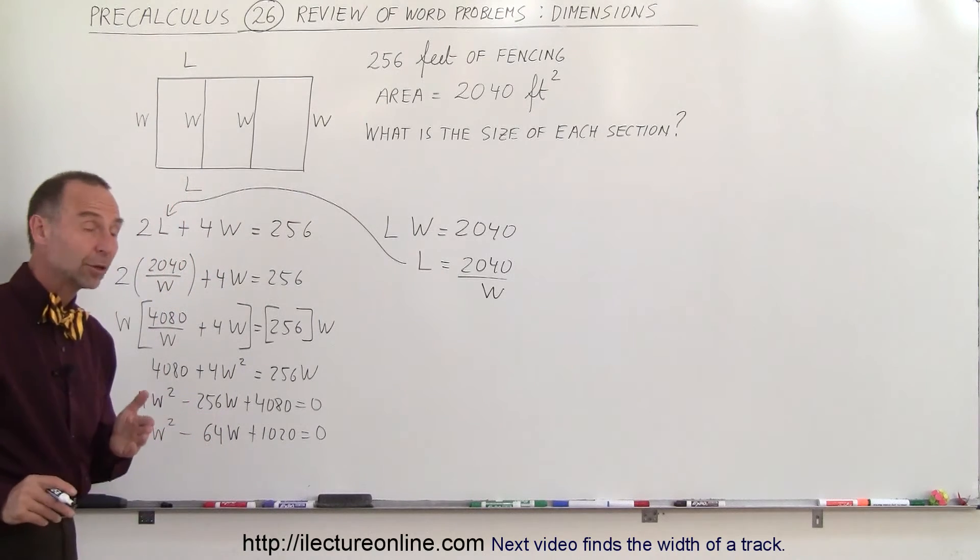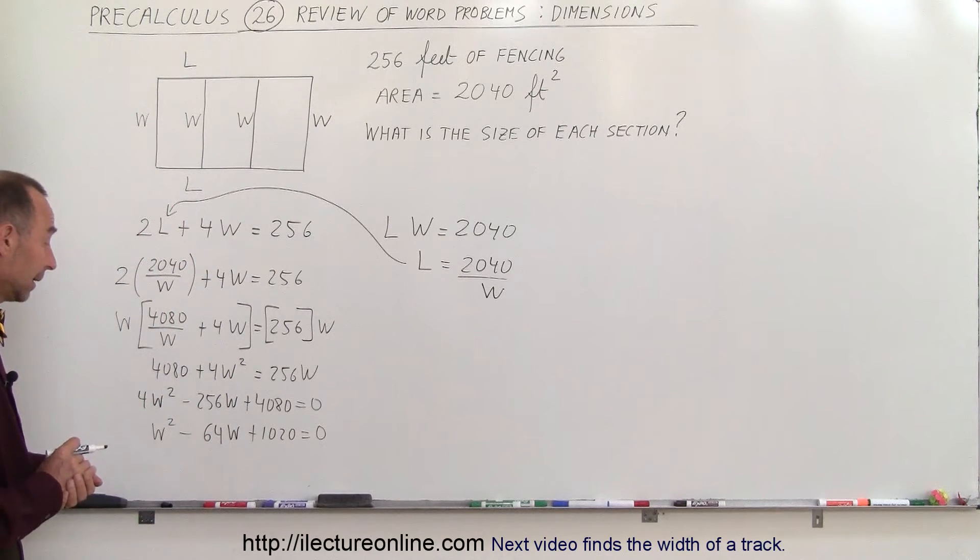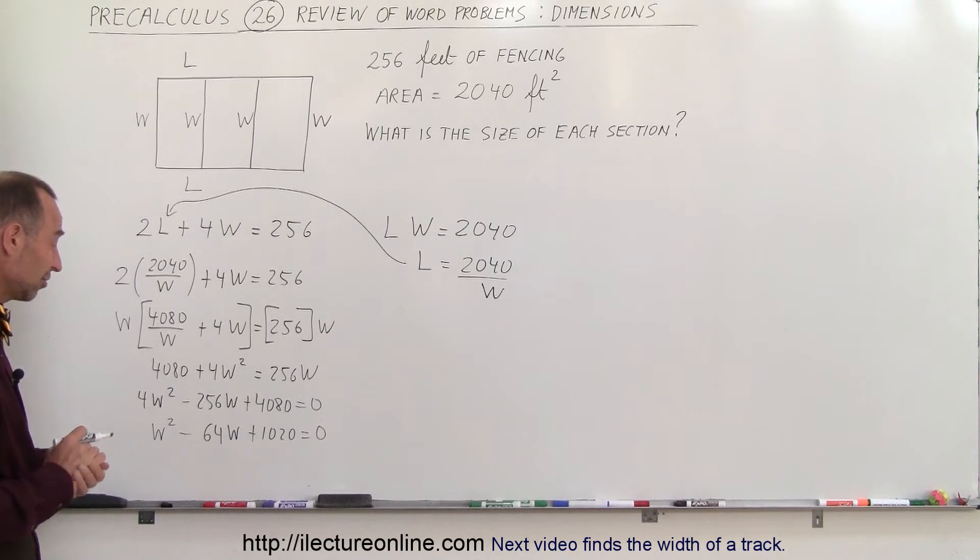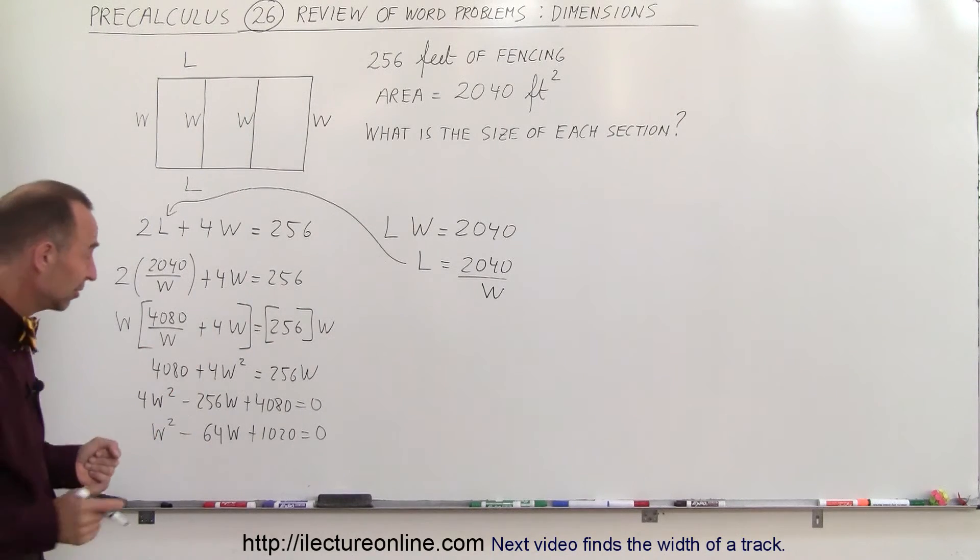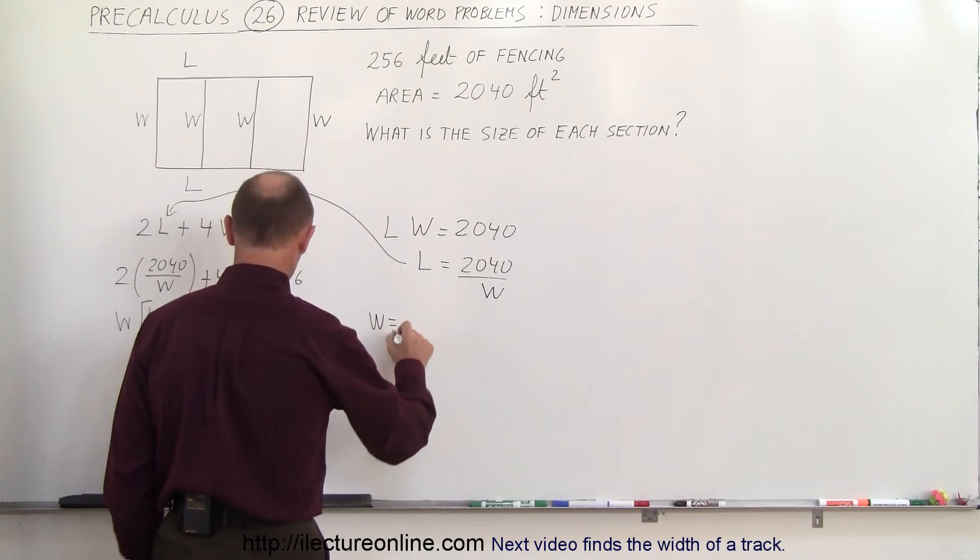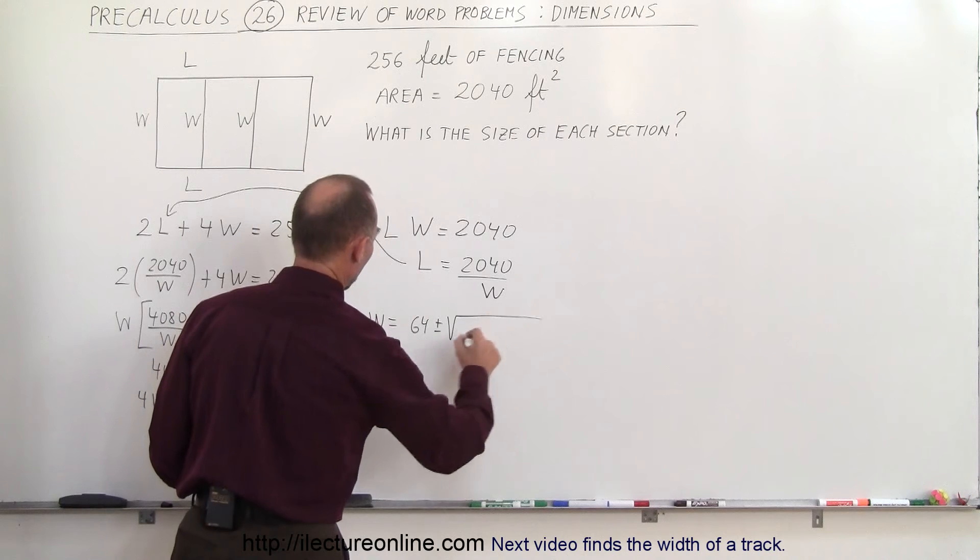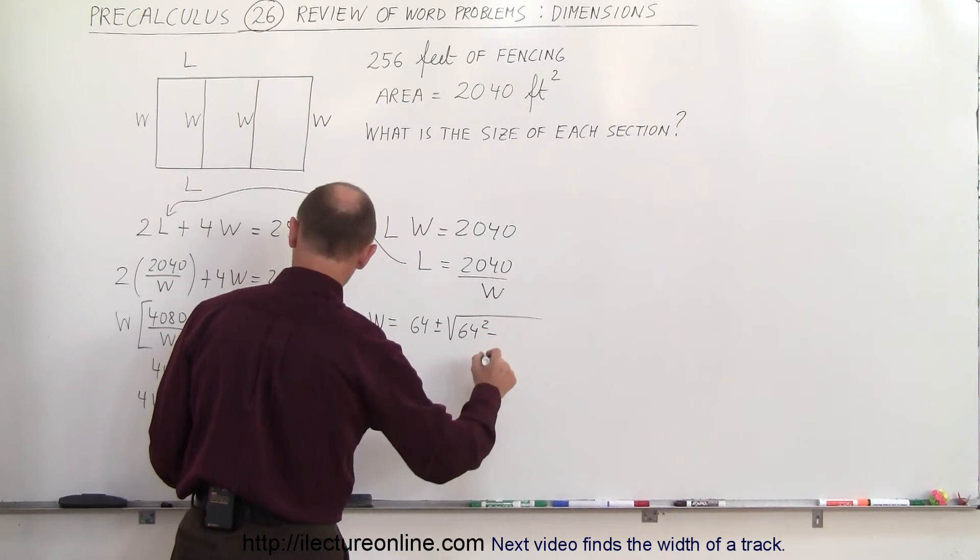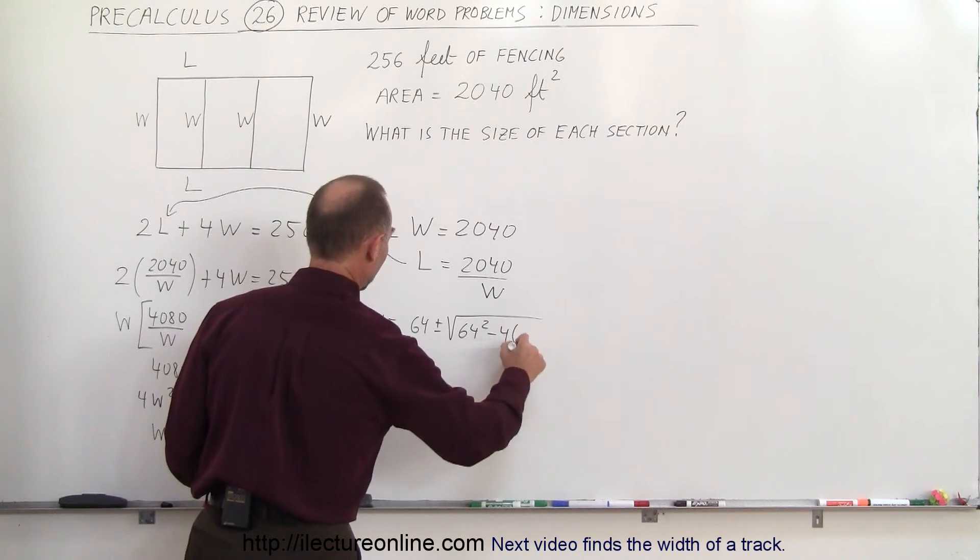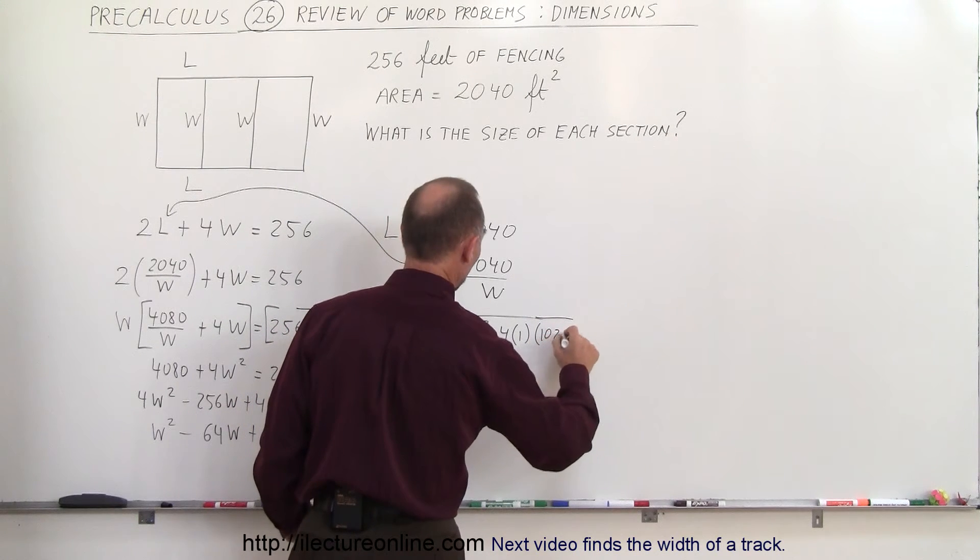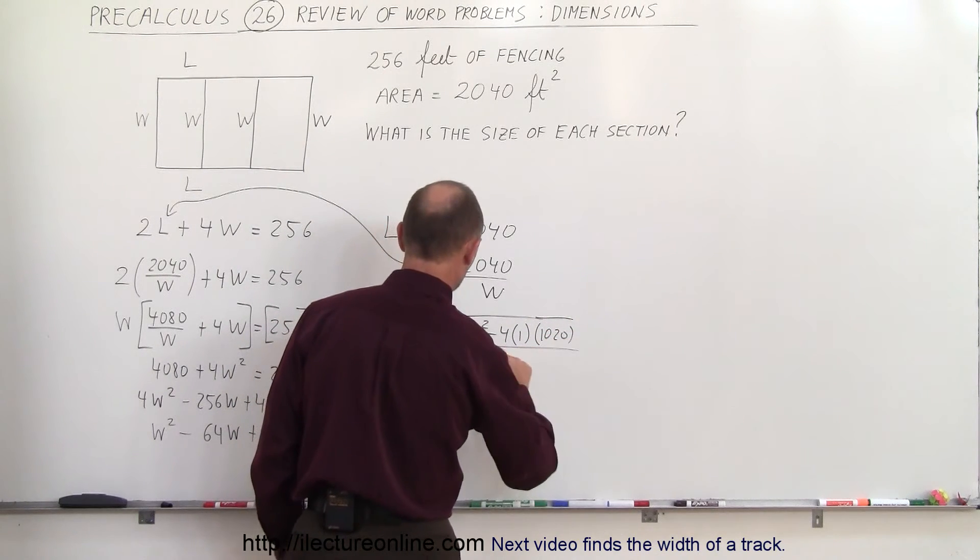Now we're ready to go ahead and solve that. It looks like we probably want to use the quadratic formula here because we could try to factor but quadratic formula is easier so let's do that. So W is equal to minus B which is 64 plus or minus the square root of 64 squared minus 4 times A which is 1 times C which is 1020 and the whole thing divided by 2A which is 2.